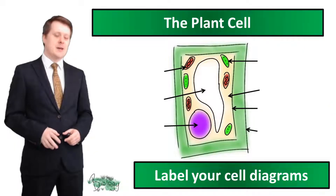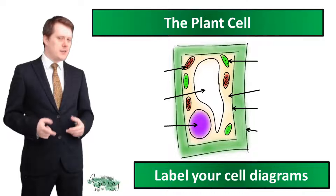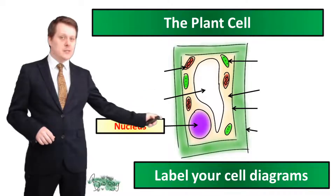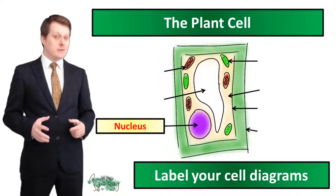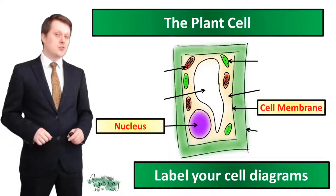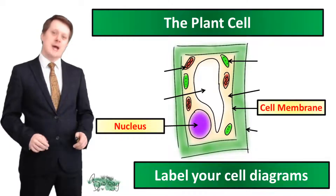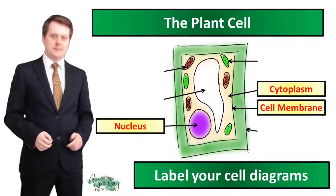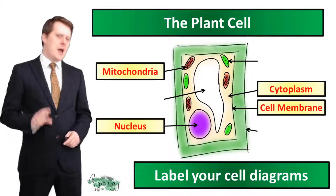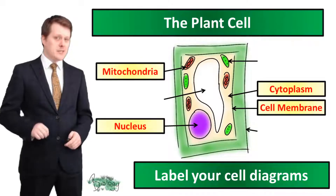We're going to label our plant cell diagram. Again, if you haven't got the worksheet, pause the video, sketch the cell and then when you've finished unpause the video and we'll go through the labelling together. Like our animal cell, our plant cell needs a nucleus — this contains the genetic material for our plant cell. Also like our animal cell, our plant cell has a cell membrane to control what goes into and out of the plant cell. Our plant cell also has a cytoplasm where chemical reactions occur, mitochondria which releases energy to the plant cell, and although I haven't labelled it on this diagram, our plant cells also contain ribosomes where the proteins are synthesised.